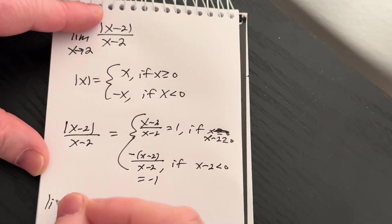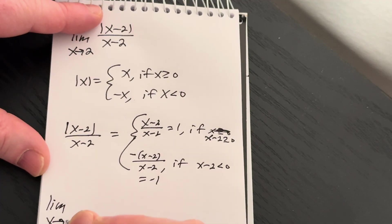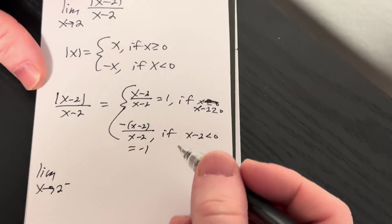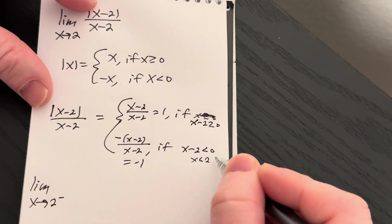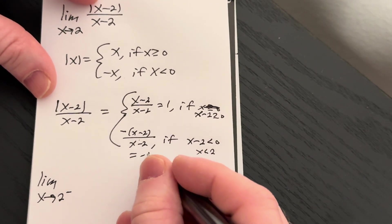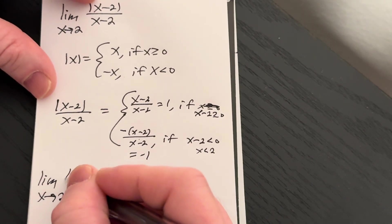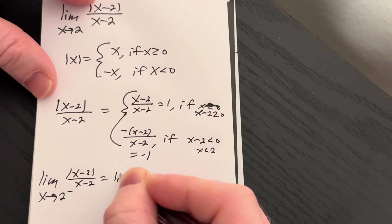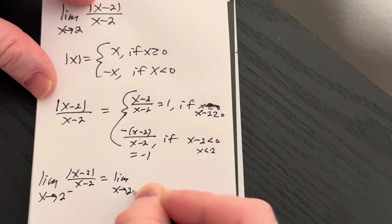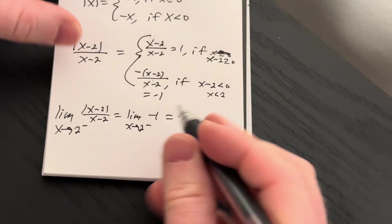So if we're approaching from the left, that means x is less than 2, or x minus 2 is less than 0. So we use negative 1. So this whole thing simply becomes negative 1.